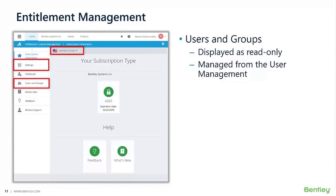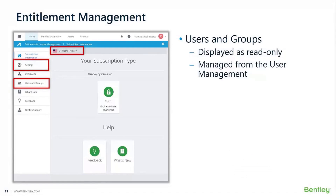Part of the entitlement management configurations includes a visualization of the users and groups set up by the administrator. From here you have a read-only view of those users and groups. If you need to modify them, add people to a group, revoke access, or register new users, you would do that from the user management section, not from the entitlement menu or subscription information.